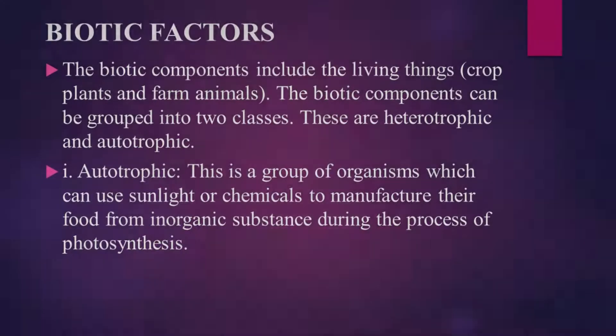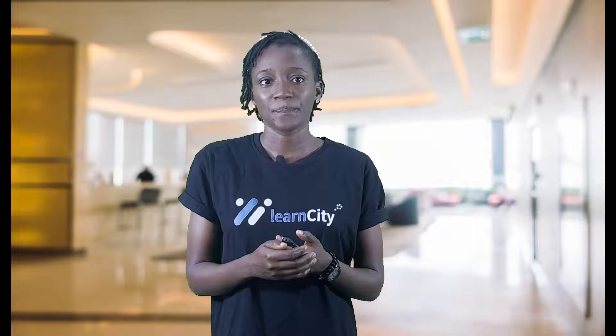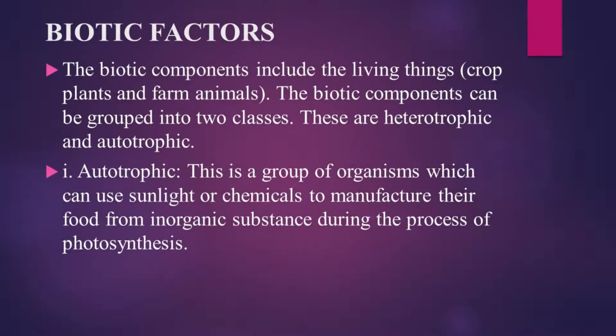The biotic components include living things, which are crop plants and farm animals. The biotic components can be classified into two classes: the heterotrophic and the autotrophic. The autotrophs are a group of organisms which can use sunlight or chemicals to manufacture their food from inorganic substances during the process of photosynthesis.